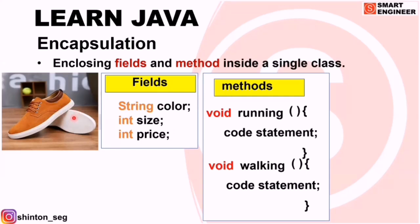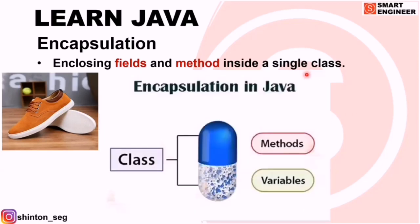Methods are functions associated with an object. With the shoe object, the functions we can perform are running and walking — those are our methods. I used void here so I don't need a return statement. If I use a data type like int or String, I would need a return statement. In encapsulation, we enclose these fields and methods inside a single class — like a capsule.